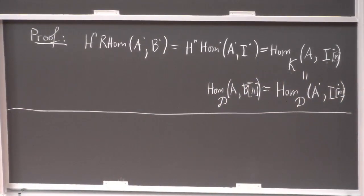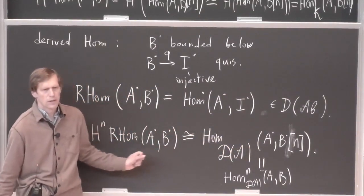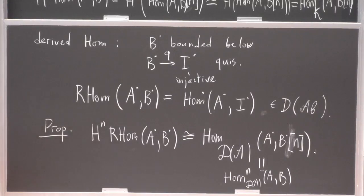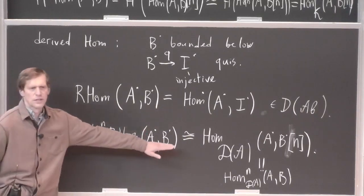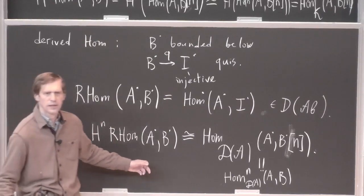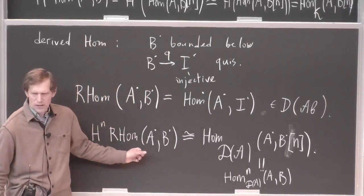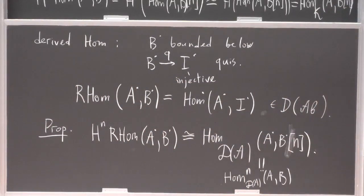The main use of this observation for us is that we'll be using the left-hand side to compute the right-hand side. When we consider categories of sheaves, we have some local-to-global ways of computing it — a sheafified version of this complex and then passing to global sections. So we'll be more focused on this side, but this equality translates computations into calculations of morphisms in the derived category.